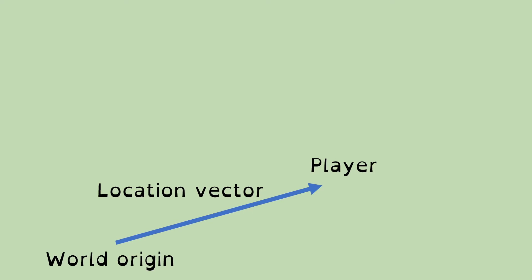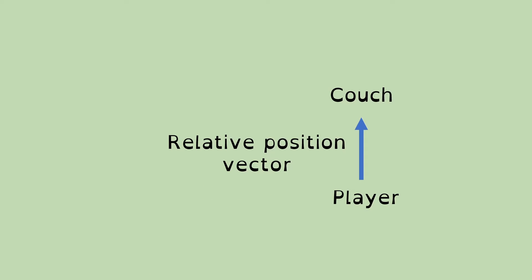So let's think about what we want in terms of vectors. We already know about location vectors. We've got the location vector which tells us where the player is in the world — the bottom end of this vector is at the world origin and the top end is at the player. And what we also want is a vector from the player to the couch, which is a relative position vector. As the player moves around, the couch stays the same position relative to the player — that's why it's called a relative position vector.